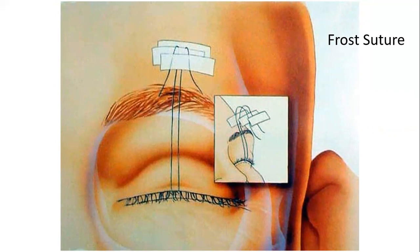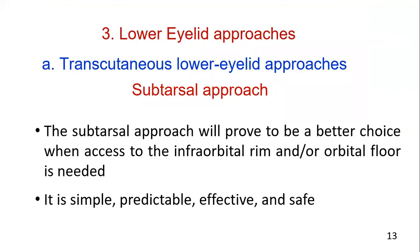A subtarsal approach with a postoperative frost suture will reduce scleral show and ectropion. This makes it a reasonable compromise for the average oral and maxillofacial surgeon who treats orbital injuries infrequently. The subtarsal approach will prove to be a better choice when access to the orbital rim and orbital floor is needed. It is simple, predictable, effective, and safe.